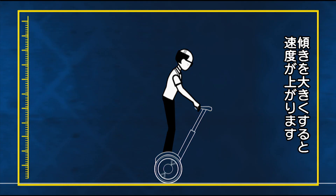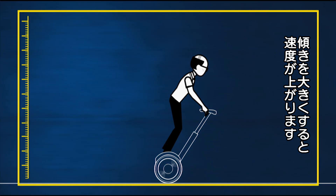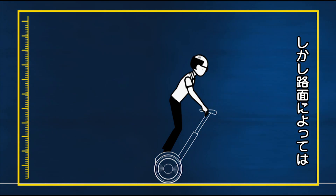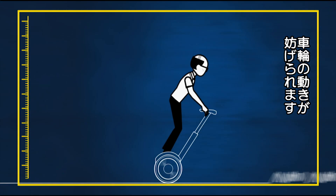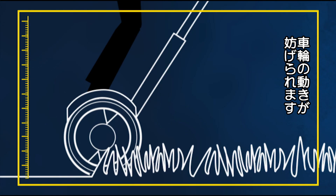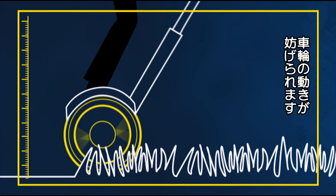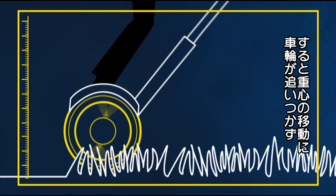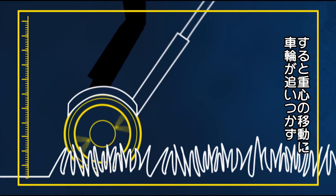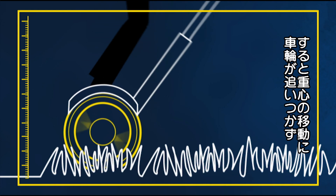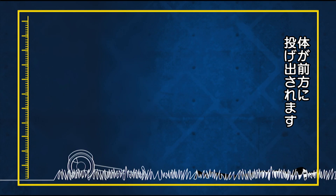So the greater the lean in either direction, the higher the speed. That's all very well, but any variations in surface can affect the traction of the tyres. If it loses too much traction, the Segway can't accelerate fast enough to keep up with the rider's centre of mass.